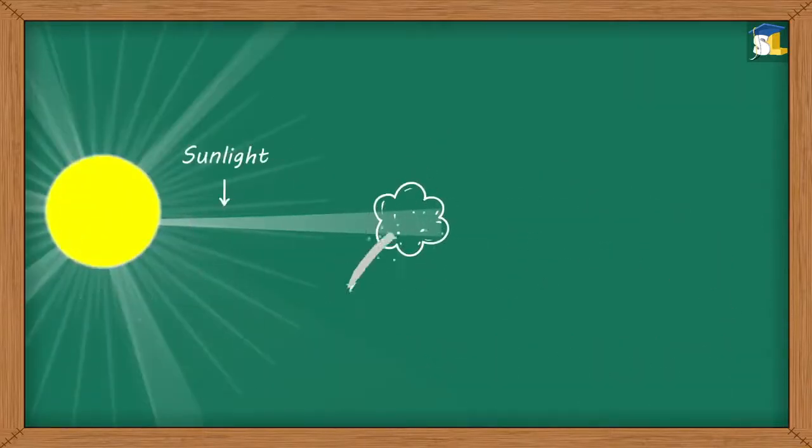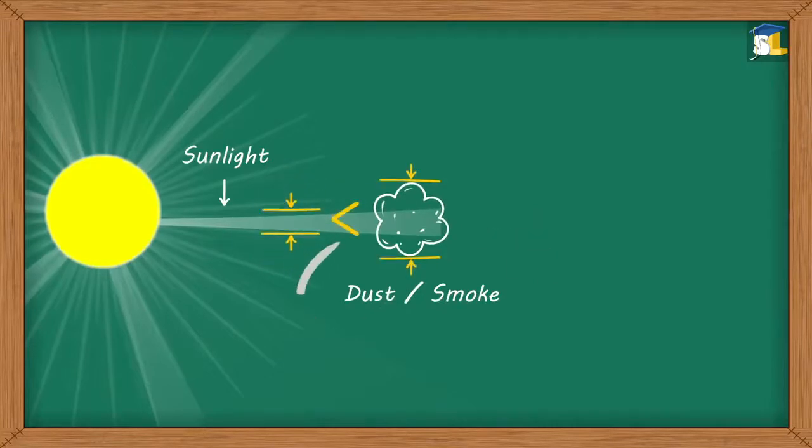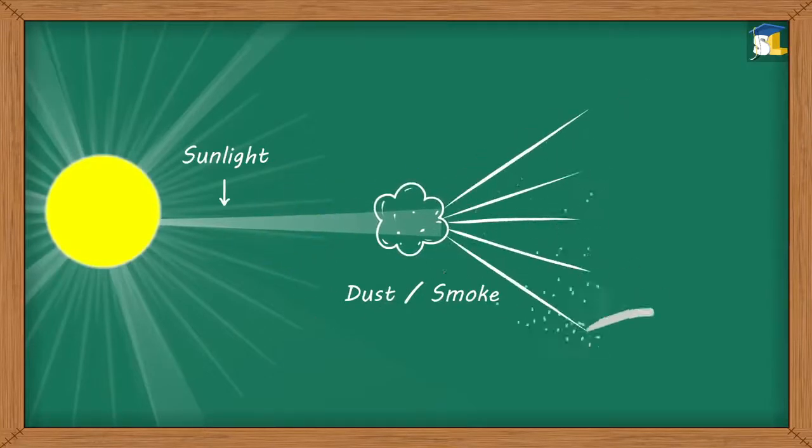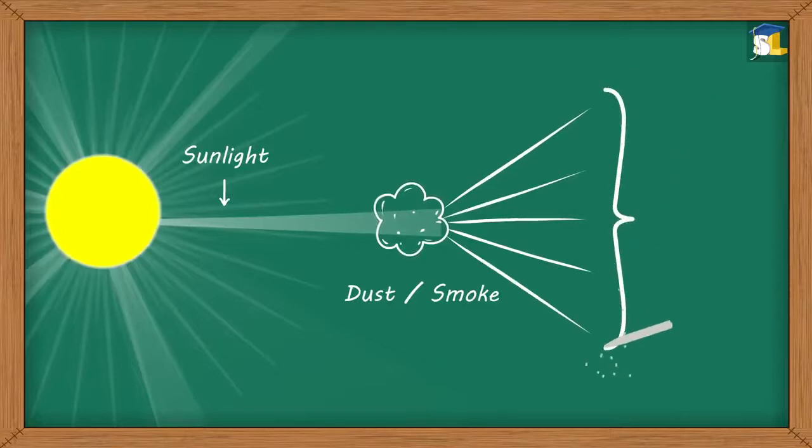When sunlight strikes particles of dust, smoke, etc., which are bigger than the wavelength of sunlight, all the colors of sunlight are equally scattered. As a result, the scattered light appears white.